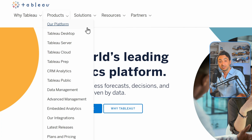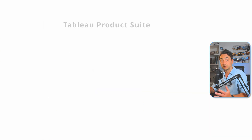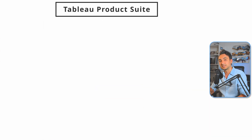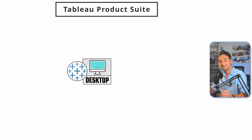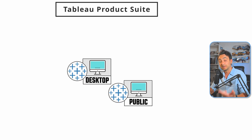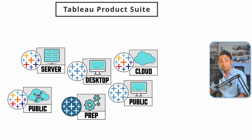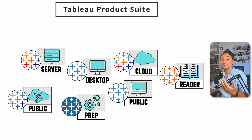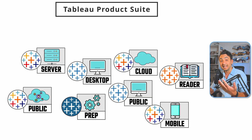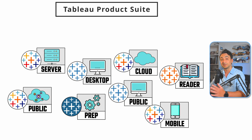It's really important to understand the differences, functionalities, and limitations of each Tableau product. The Tableau product suite contains eight different products: Tableau Desktop, Tableau Public Desktop, Tableau Prep, Server, Cloud, Public Cloud, Reader, and Tableau Mobile. These products can be split into two main categories.